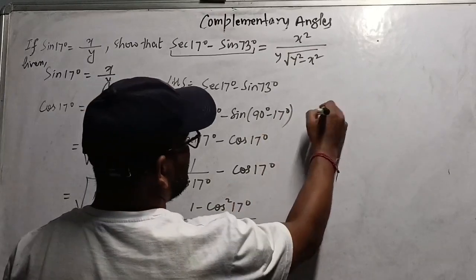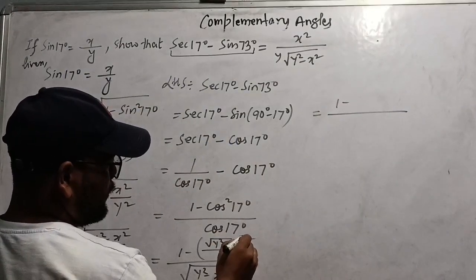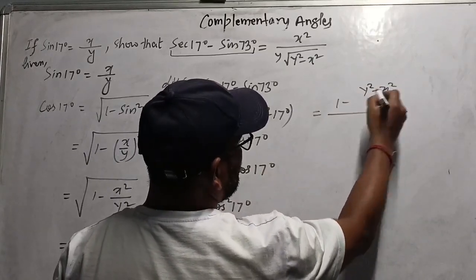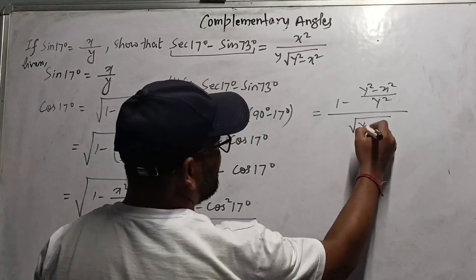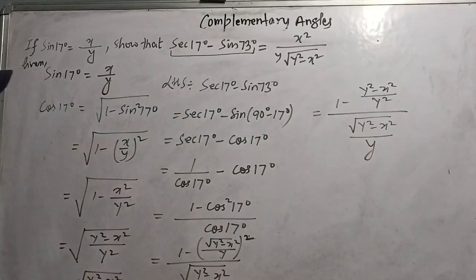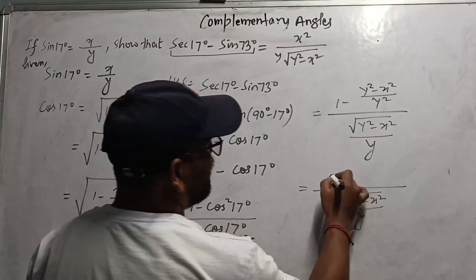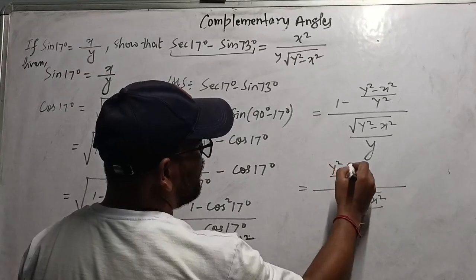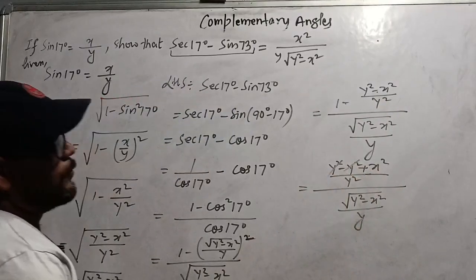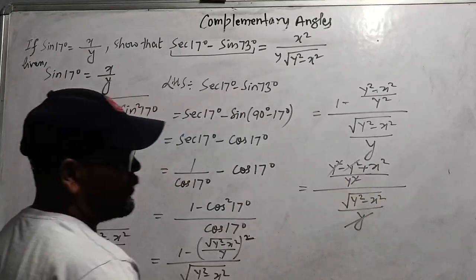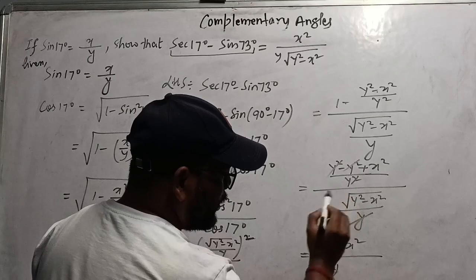After substituting: the square cancels with the root, giving (y² - x²)/y² in the numerator region. Taking LCM and simplifying: 1 minus (y² - x²)/y² gives x²/y². The numerator becomes x² and the denominator involves y and √(y² - x²).